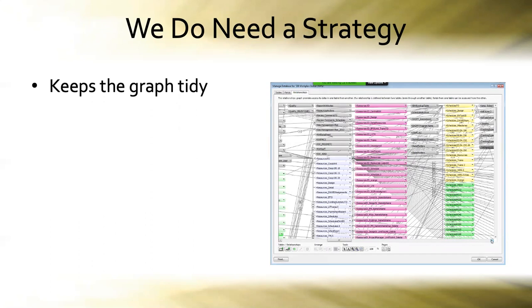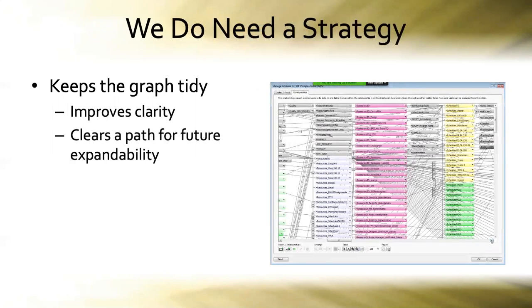It keeps the graph tidy, which will improve clarity, and it'll provide a clear path for future expandability. This graph — not one that I had worked on, fortunately — was sent to me by a friend. It's a relationship graph for a database solution that originally started with three tables. Over time they always grow; users come up with new ideas, and the system grows and grows, so we've got to make sure we have a clear path for expandability.